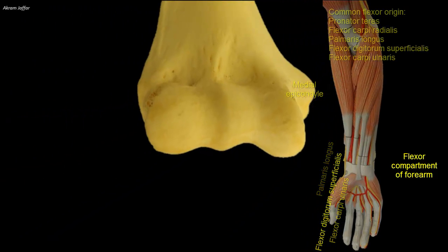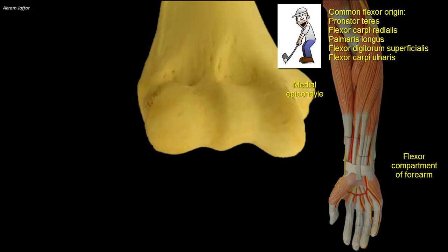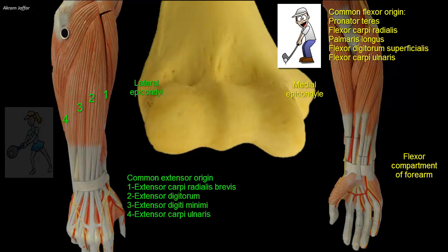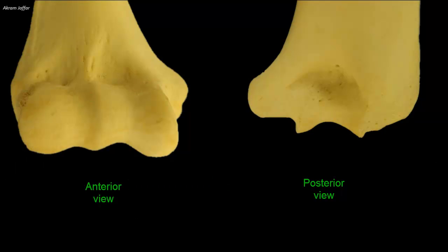Inflammation of this common flexor origin results in a painful elbow condition called golfer's elbow. The smooth area on the front of the lateral epicondyle is for the attachment of the common extensor origin, from which arise the fused tendons of extensor carpi radialis brevis, extensor digitorum, extensor digiti minimi, and extensor carpi ulnaris. Tennis elbow is an inflammation of the common extensor origin due to their overuse.